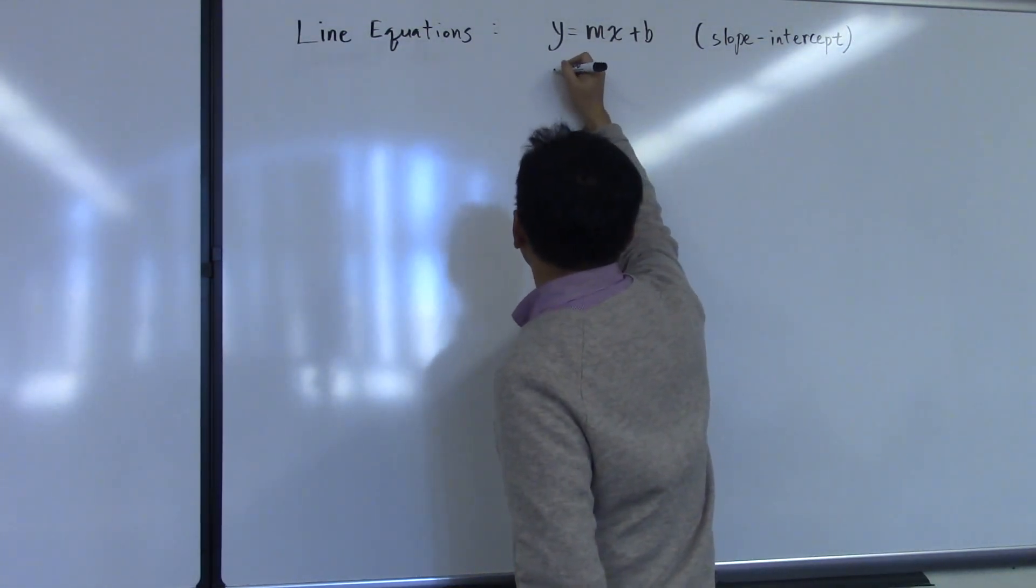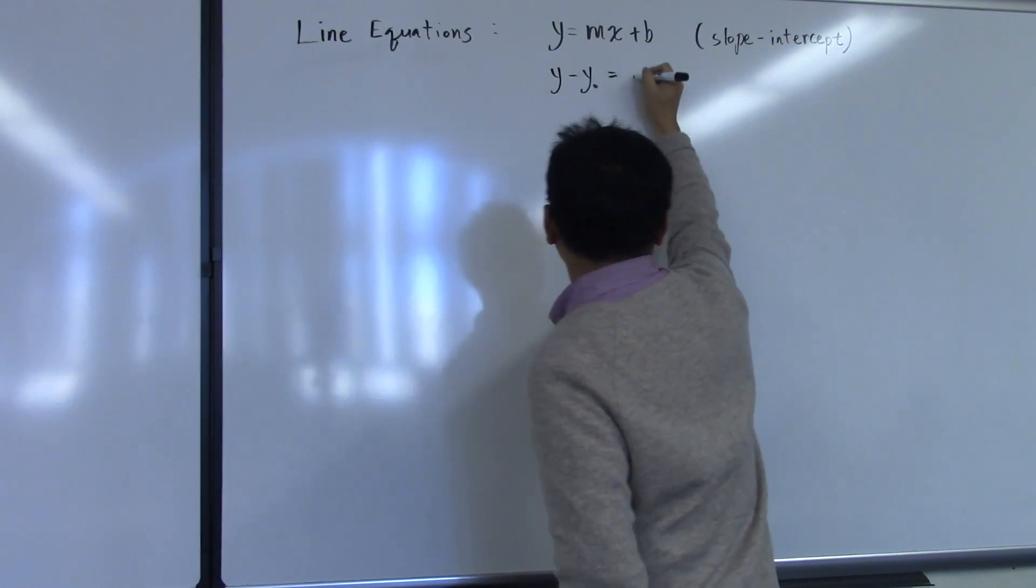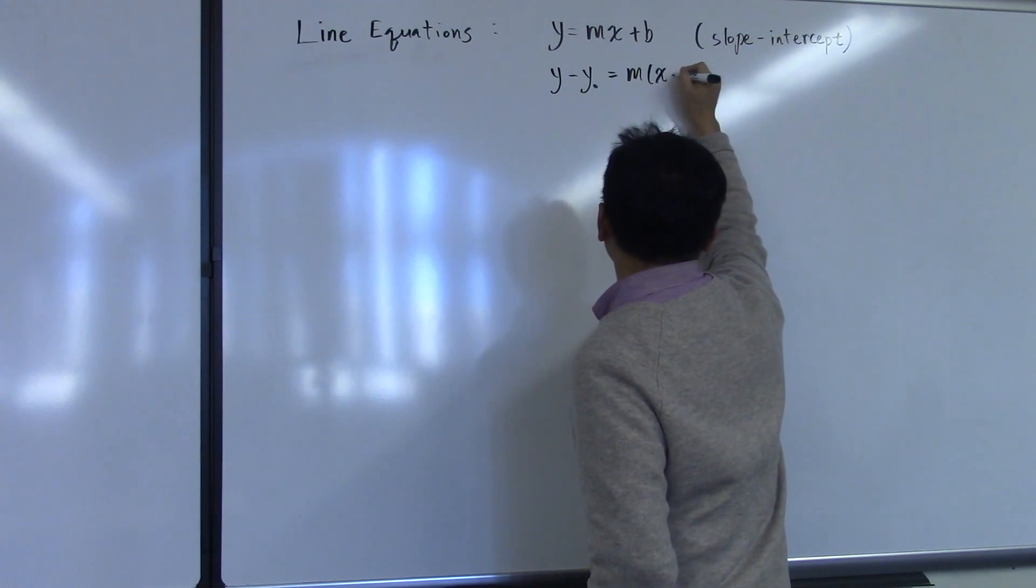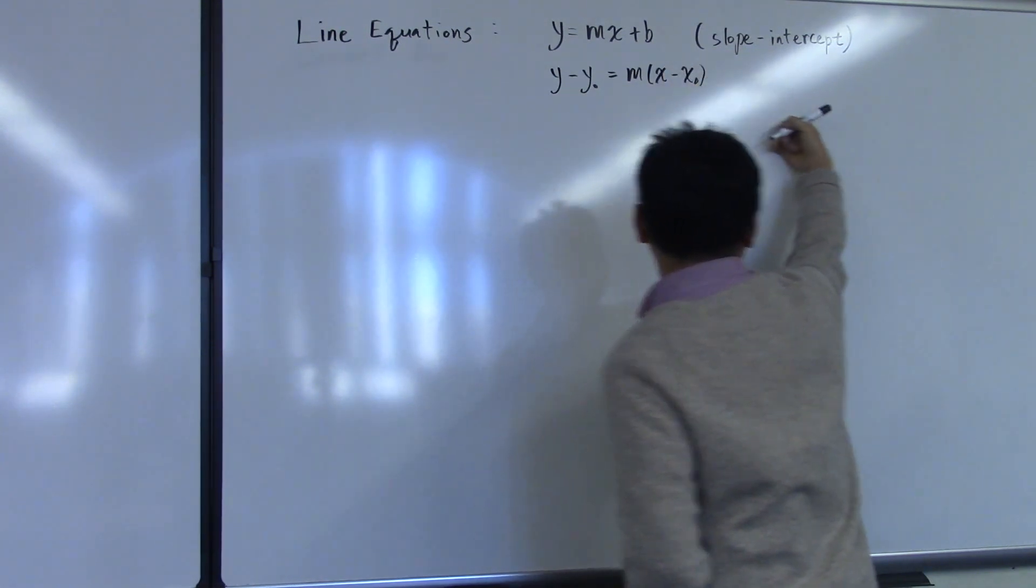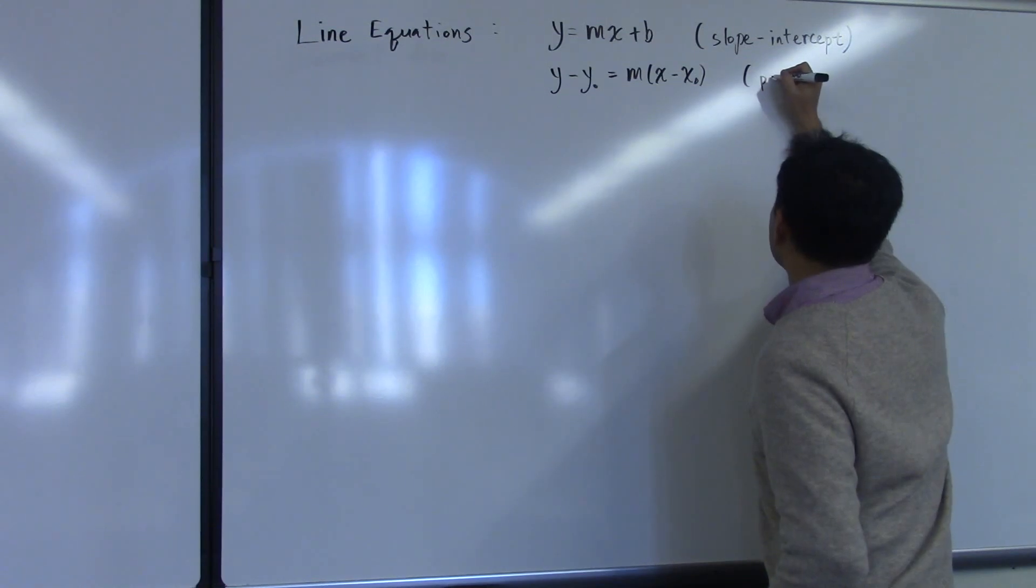And another is y minus y naught equals m times x minus x naught, which is called the point-slope form.